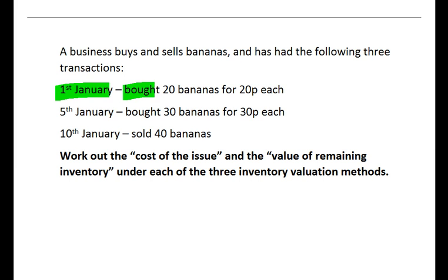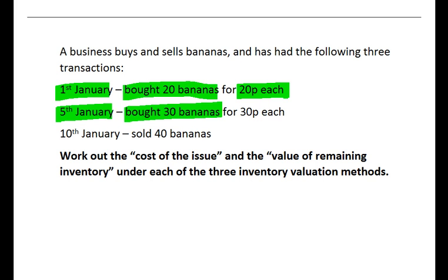On the 1st of January they bought 20 bananas — that's an increase in their inventory — and those bananas cost 20 pence each. On the 5th of January they bought 30 further bananas going into the storeroom; those bananas cost a little bit more, 30 pence each. You'll often see the price of purchases rising over time, typically because of inflation, which means prices rise over a period of time.